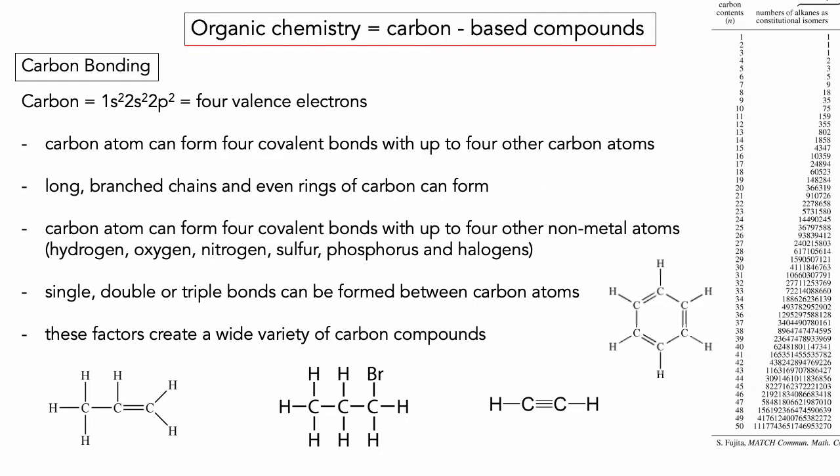Carbon has four valence electrons, which means it can bond to up to four other carbon atoms, giving it the ability to form really long branched chains. It can also bond with non-metals, halogens, phosphorus, sulfur, and hydrogen — it loves to bond with hydrogen. It can bond with some metals as well. It can also form single, double, and triple bonds. All of these factors mean you can get an almost limitless number of organic molecules. In this course we're literally scratching the surface of organic chemistry.